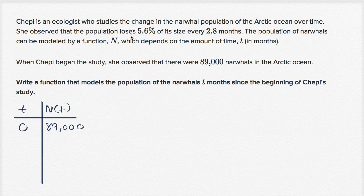Now what's another interesting one? Well t is in months, and we know that the population decreases 5.6% every 2.8 months. So let's think about when t is 2.8 months. Well then the population should have gone down 5.6%. So going down 5.6% is the same thing as retaining what? What's one minus 5.6%? Retaining 94.4%.